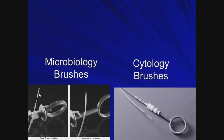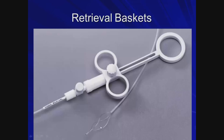Brushes for cytology: the brush is recessed within a protective casing so you can brush tissue and retract it back inside to prevent contamination as you pull it back out. These are used for cytology and tissue sampling. Retrieval baskets are used for aspirated objects further down that the rigid bronchoscope can't access — you slide the basket around the object and pull back to close the basket down and retrieve it.